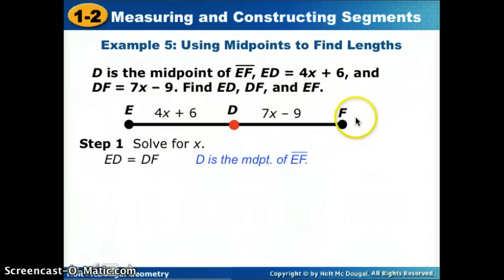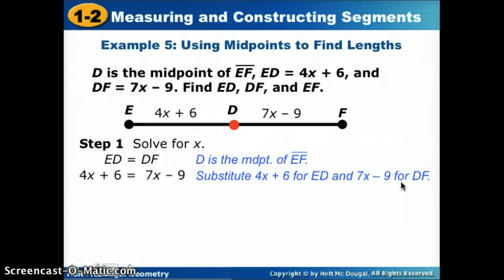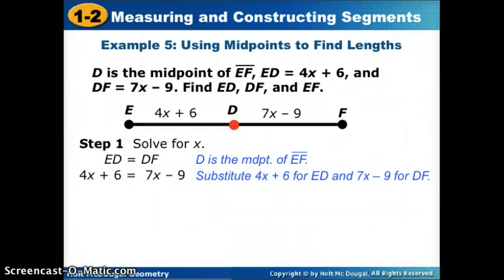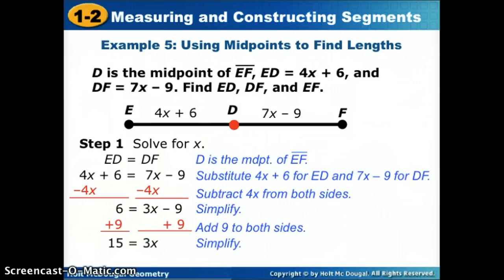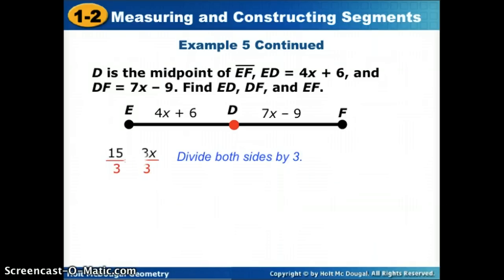Just like our between problems, now I take their measures. ED is 4X plus 6, and DF is 7X minus 9. Plug those in, and now all we do is algebra. We take the variables, the smaller of your two variables, subtract them from both sides. Then take your number, 9, and add it to both sides. Then to get X by itself, we divide by 3, and so X is 5.